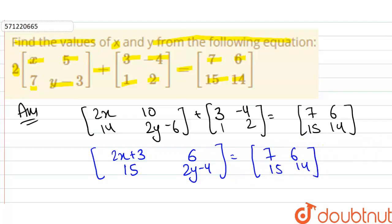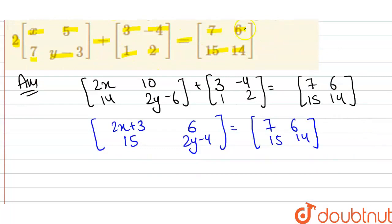If these two matrices are equal, then each component will also be equal. It means that 2x plus 3 should equal 7, and 6 and 6 is the same, 15 and 15 is the same, and 2y minus 4 should equal 14.